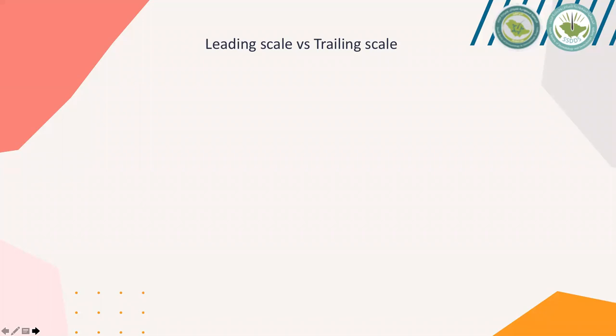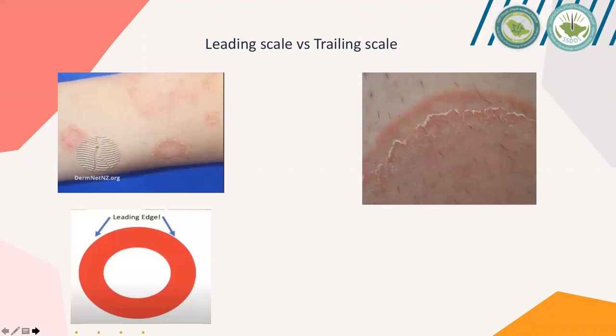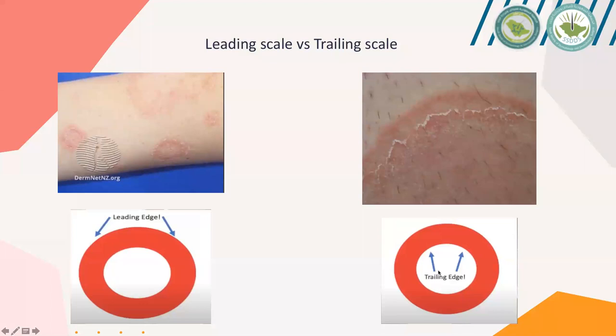Leading and trailing scale: in the case of annular skin lesions, we have two edges — either the leading edge, which is the outer edge, or the trailing edge, which is the inner edge. Scale over the leading edge is usually seen in tinea corporis infection, while scale over the trailing edge is manifested in erythema annulare centrifugum.